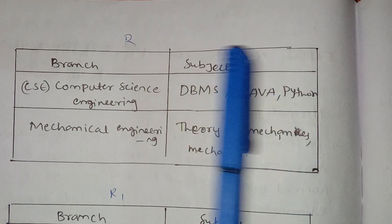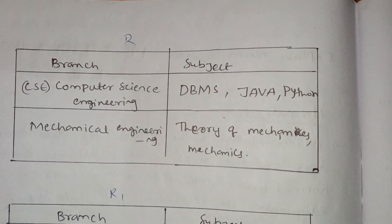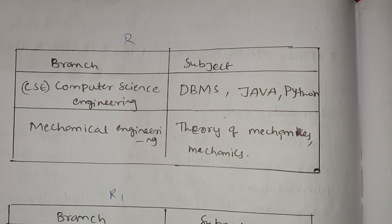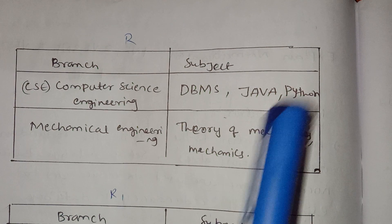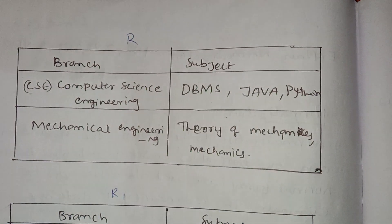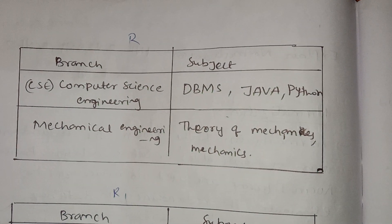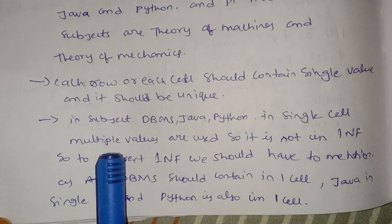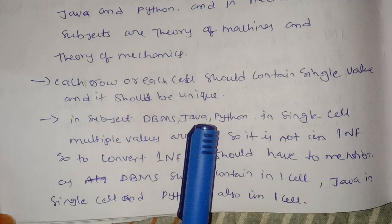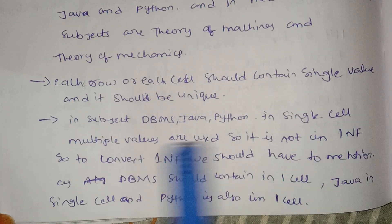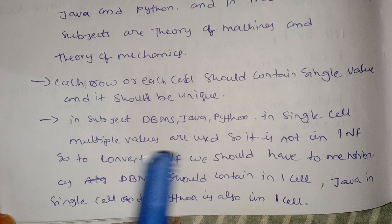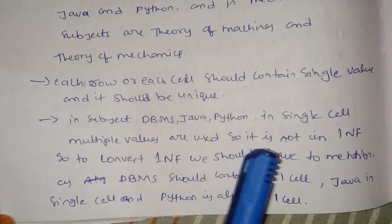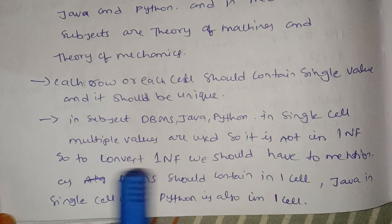In a single cell, there are many subjects listed like Computer Science subjects. So they are not in 1NF. We need to reduce them. In the subject column, DBMS, Java, and Python are stored in a single cell with multiple values, so it is not in 1NF.